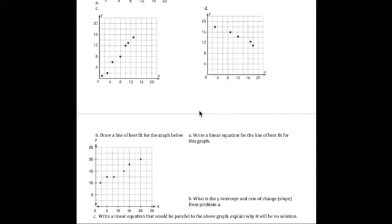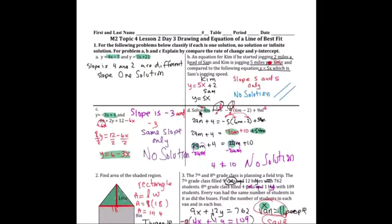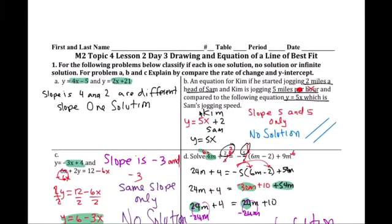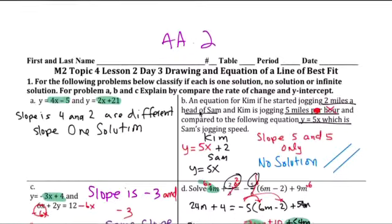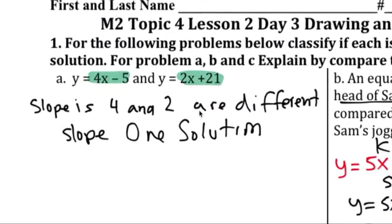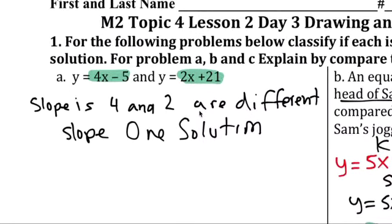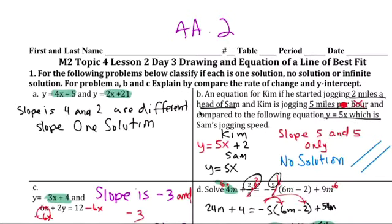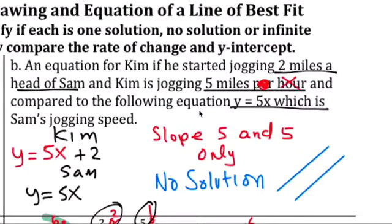We did IXL, eighth grade A, A dot two in class — not dot Z, but dot two. Make sure you do that. Get to 70-80 and you get one extra credit, 90 you get three, and 100 you get six. That's how you do that.